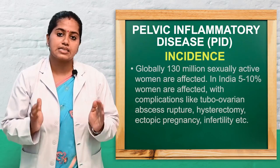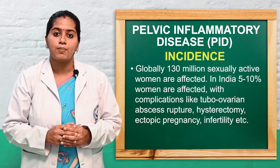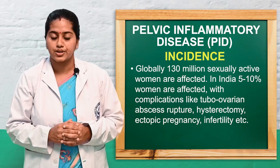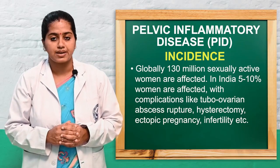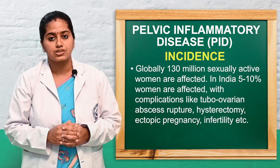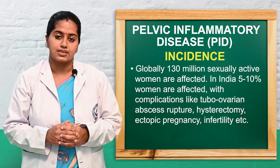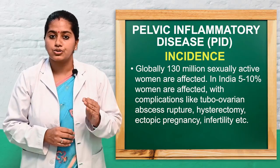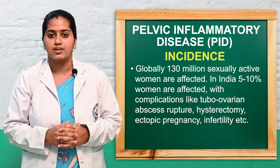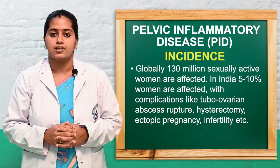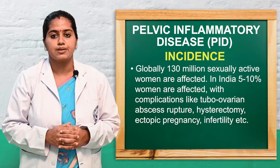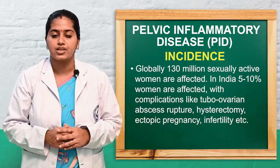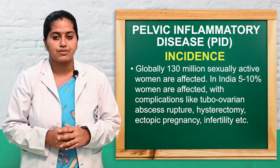Regarding incidence, globally 113 million women who are sexually active or of reproductive age are affected with pelvic inflammatory diseases. In India, 5 to 10 percent of women are affected with PID. Complications include tubo-ovarian abscess rupture, hysterectomy, ectopic pregnancies, and infertility problems. Nowadays, women less than 25 years of age are also getting pelvic inflammatory diseases.